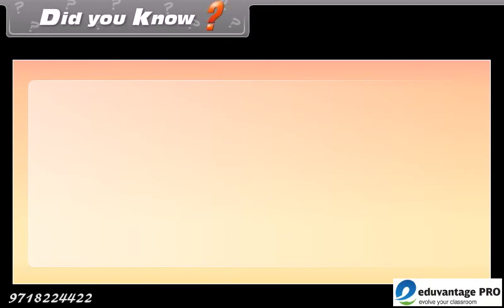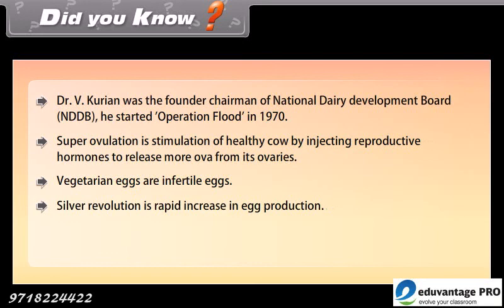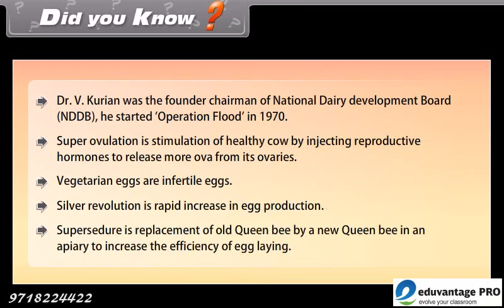Did you know? Dr. V. Kurian was the founder chairman of the National Dairy Development Board (NDDB). He started Operation Flood in 1970. Super ovulation is the stimulation of a healthy cow by injecting reproductive hormones to release more ova from its ovaries. Vegetarian eggs are infertile eggs. Silver revolution refers to the rapid increase in egg production. Super seizure is the replacement of an old queen bee by a new queen bee in an apiary to increase the efficiency of egg laying.